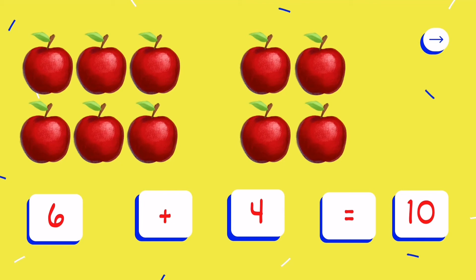How many apples in the first group? Yes, 6 apples. How about the second group? 1, 2, 3, 4 — 4 apples. That means 6 plus 4 is equal to 10.